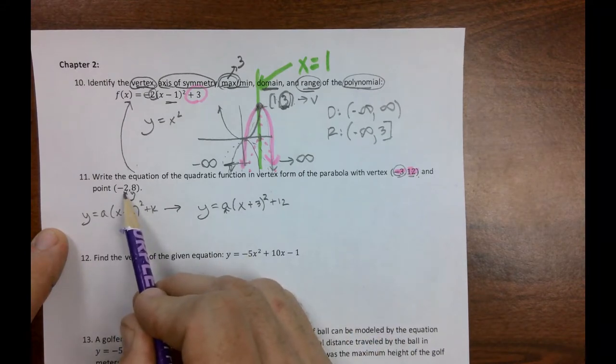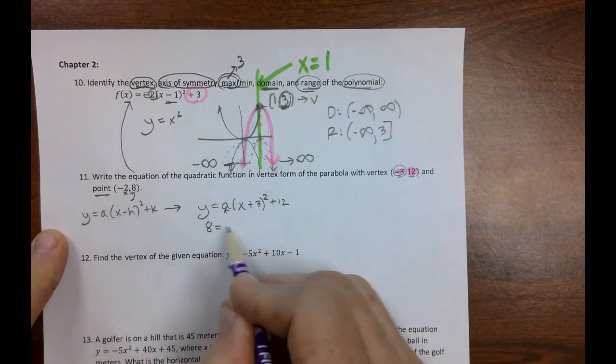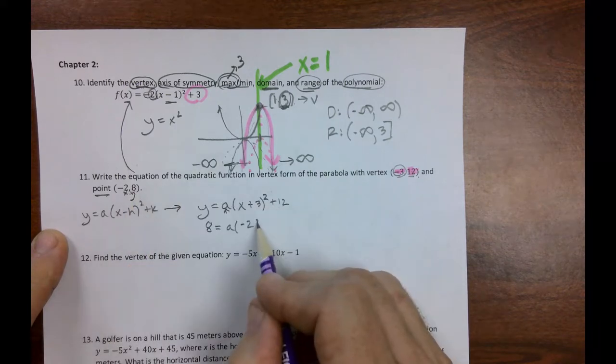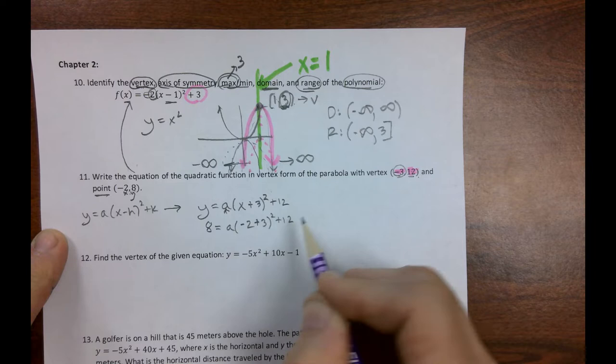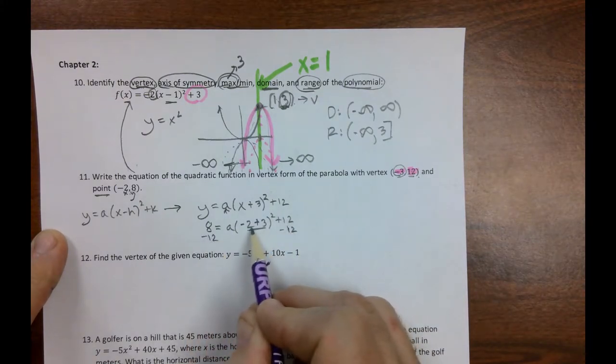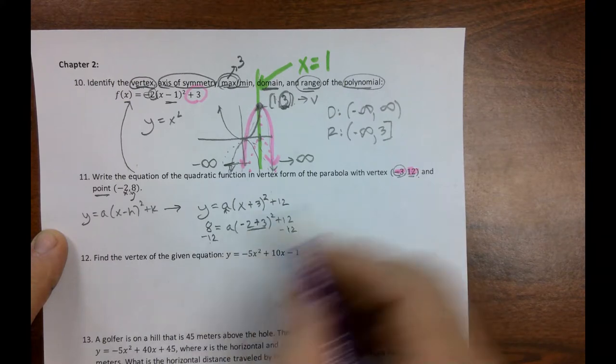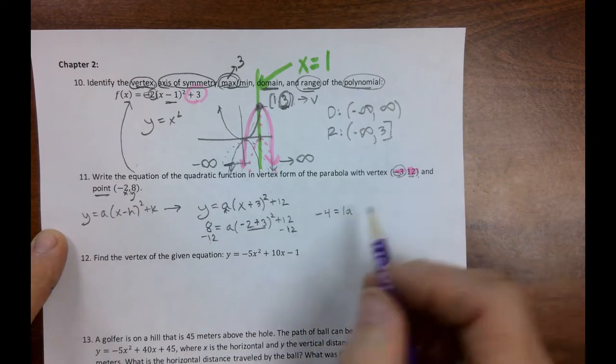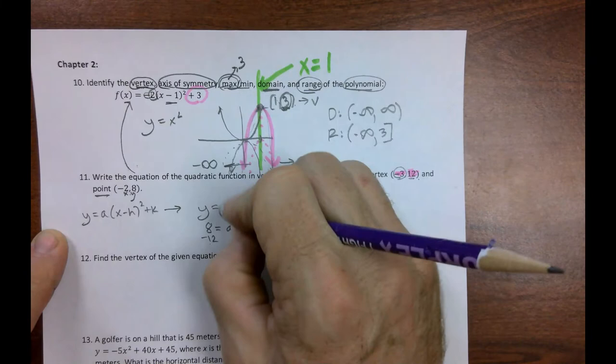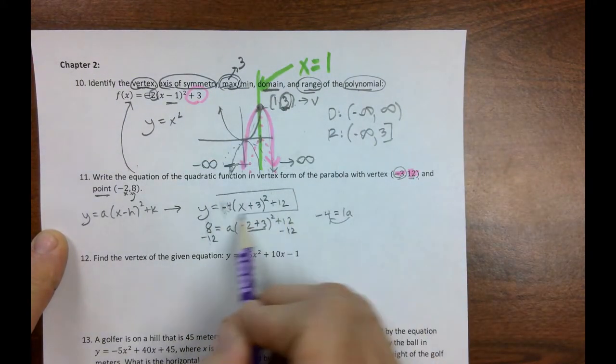Notice we don't know what a is. That's why they gave us this little clue. Let x be negative 2. Let y be 8. Because it goes through this point, we can use it. So 8 equals a, our new x value, plus 3 squared, plus 12. Now, I'm going to do two things at once. I'm going to subtract 12 from both sides, and I'm going to clean this up. Negative 2 plus 3 is 1. 1 squared is 1. So really, I get negative 4 equals 1a, which is just telling you a is negative 4, which you just put it right here. And you're done. So there's number 11.